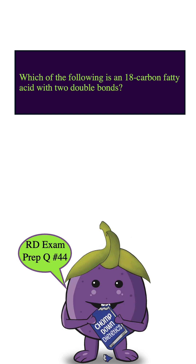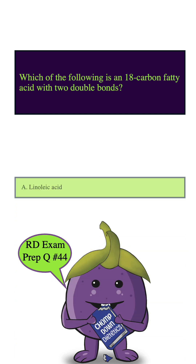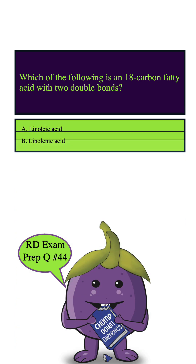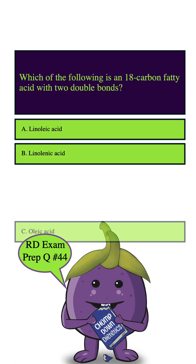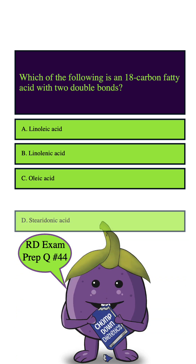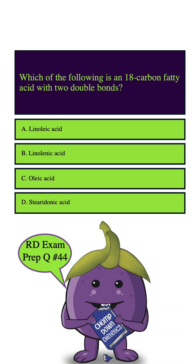Which of the following is an 18-carbon fatty acid with two double bonds? A. Linoleic acid. B. Linolenic acid. C. Oleic acid. D. Stearidonic acid. So let's highlight our key words: 18-carbon fatty acid and two double bonds.